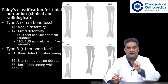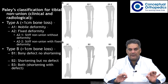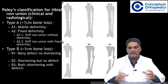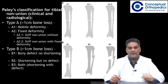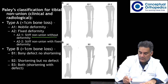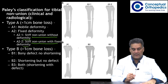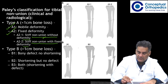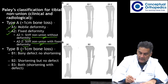There is a Paley classification for tibial nonunion. He described two types: Type A and Type B. Type A is less than one centimeter bone loss or no bone loss. Type A1 is a mobile deformity — frankly mobile. Type A2 is a fixed deformity — a stiff nonunion with fixed deformity. So Type A1 is mobile deformity and Type A2 is stiff nonunion with or without fixed deformity.